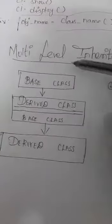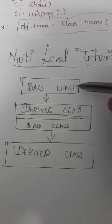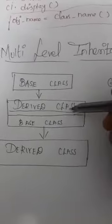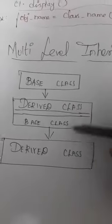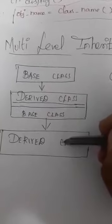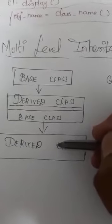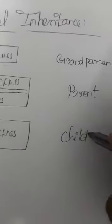Next is multi-level inheritance. Multi-level inheritance means it has different levels — three levels. The first level is your base class, the second level is your derived class, and the third level is another derived class. So, one base class and two derived classes, where the second derived class acts as a base class for the third one. A better example for multi-level inheritance is grandparent, parent, and then child.